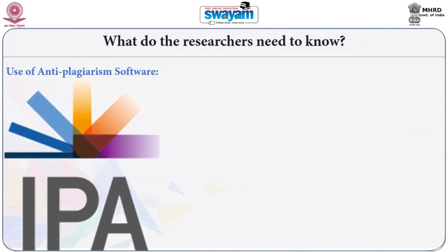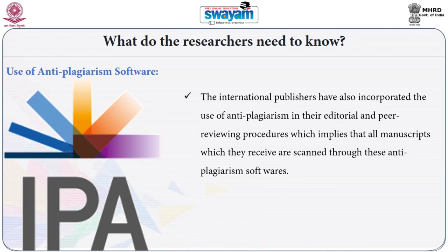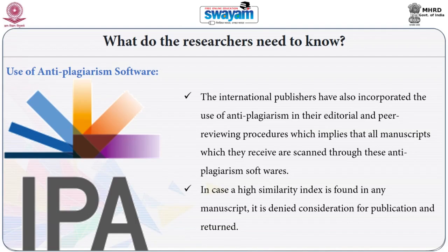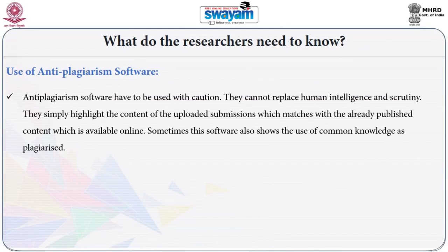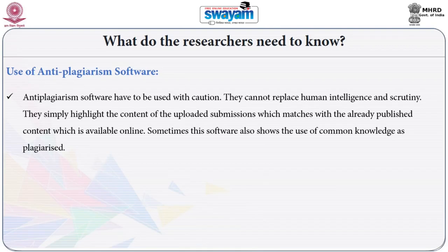International publishers have also incorporated the use of anti-plagiarism tools in their editorial and peer reviewing procedures, which implies that all manuscripts they receive are scanned through these anti-plagiarism softwares. In case a high similarity index is found in any manuscript, it is denied consideration for publication and returned. However, these anti-plagiarism softwares have to be used with caution — they cannot replace human intelligence and scrutiny. They simply highlight content of the uploaded submission which matches with already published content online, and sometimes this software also shows the use of common knowledge as plagiarized.